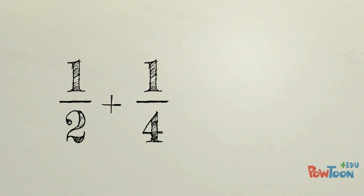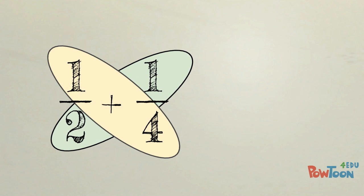Let's look at 1 half plus 1 fourth. Using the butterfly method we are going to solve this problem by grouping the 2 and the 1, and the 1 and the 4. We're going to make it a little bit easier.